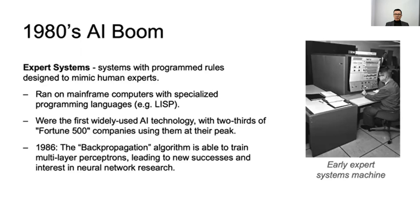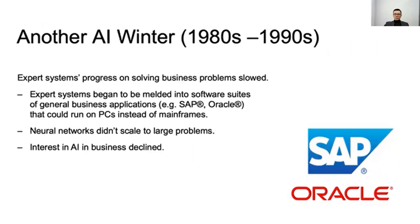In 1968, the backpropagation algorithm was able to train multi-layer networks, leading to new success and interest in neural network research. Expert systems' progress on solving business problems slowed, and by 2014, expert systems began to be integrated into general business software suites like SAP and Oracle, running on PCs instead of mainframes. Neural networks didn't scale to large problems and interest in AI in business declined.